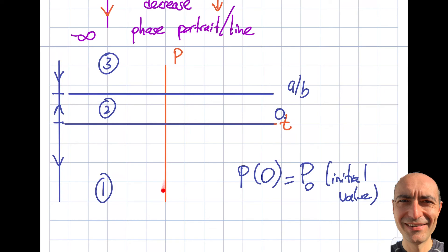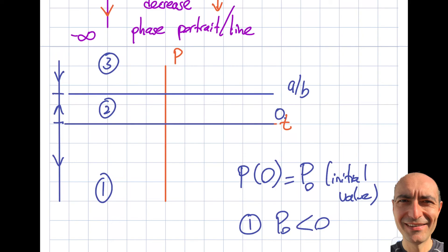For region one, p₀ is less than zero. I'll be here and I will not be able to cross this line because it's a critical point — it acts like a wall. So I will be bounded above. Since this is decreasing, there is no lower bound. As I increase my t value, the solution will keep decreasing. My particular solution will be asymptotic to zero from below, going down.